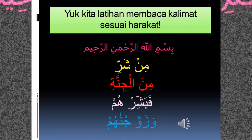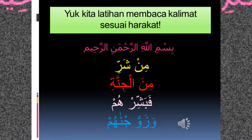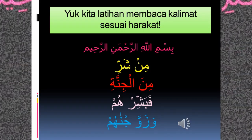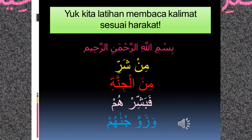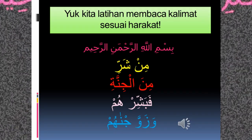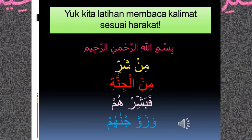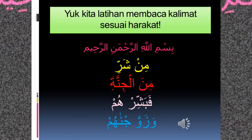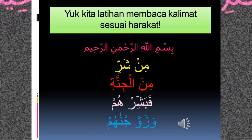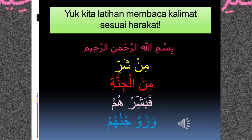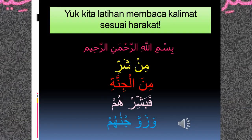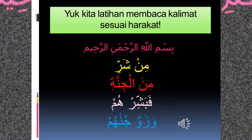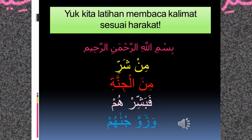Sekarang kita ulangi dari pertama sampai yang terakhir. Basmala kemudian langsung yang pertama, kedua, ketiga, dan keempat. Bismillahirrohmanirrohim. Yang pertama, Min syari. Yang kedua, Minajinnati. Yang ketiga, Fabashirhum. Yang keempat, Wazawwajenahum. Nah, seperti itu dalam membaca kalimat Al-Quran sesuai dengan harokat yang benar. Semoga kalian bisa mempelajarinya, memahaminya, serta mempraktikannya di rumah dengan baik dan benar.